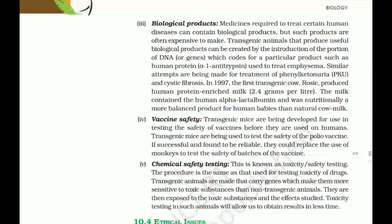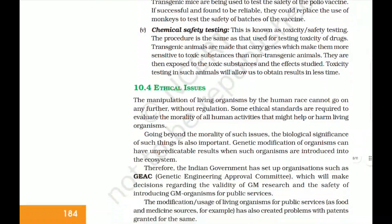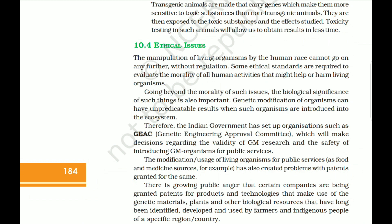Transgenic mice are being developed for use in testing the safety of vaccines before they are used on humans — for example, testing the safety of polio vaccines, potentially replacing the use of monkeys. Chemical safety testing, also known as toxicity or safety testing, uses transgenic animals that carry genes making them more sensitive to toxic substances than non-transgenic animals. They are then exposed to the toxic substances and effects studied, allowing results to be obtained in less time.